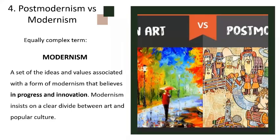When we compare postmodernism with modernism, postmodernism describes not only a period but also a set of ideas, and can only be understood in relation to another equally complex term: modernism. The 'post' in postmodernism suggests 'after.' Postmodernism is best understood as a set of ideas and values associated with a form of modernism that believes in progress and innovation. Modernism insists on a clear divide between art and popular culture.